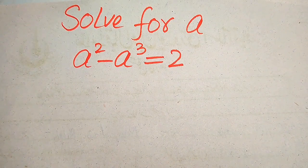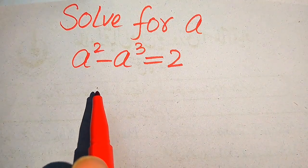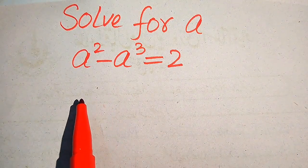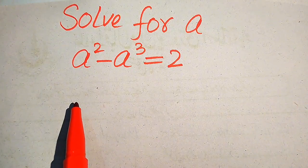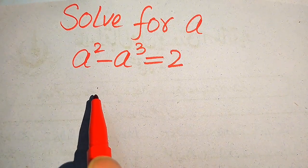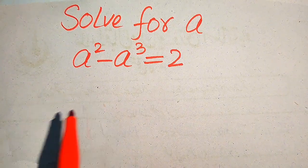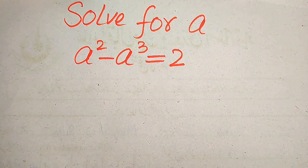Hello everyone. How to solve this problem for the values of a, if we have a squared minus a cubed equals two? We solve this problem for the values of a. This is a cubic equation, which means it has three roots, and we need to find all three roots of the given equation.